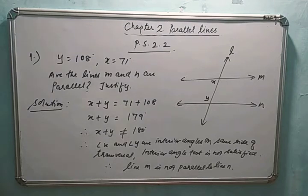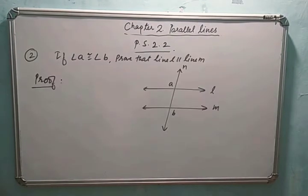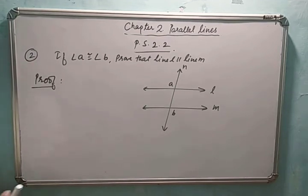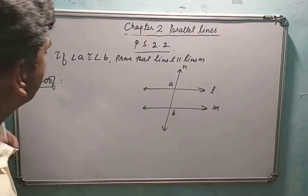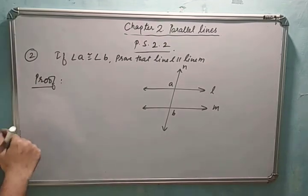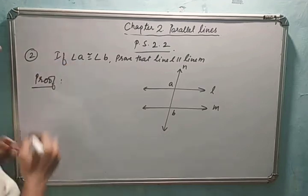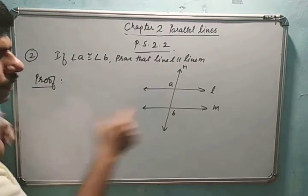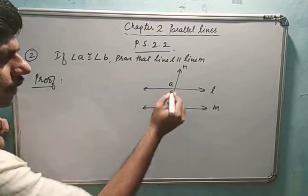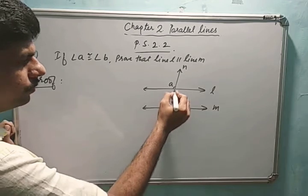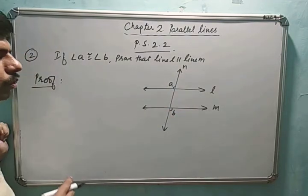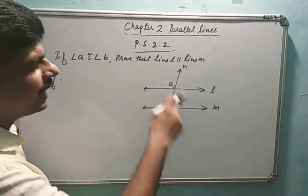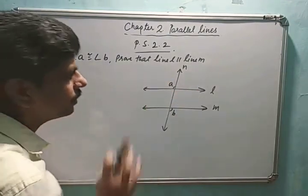Note down this sum. Now let's see the second problem: if angle a is congruent to angle b, as shown in the figure — these two angles are congruent — prove that line l is parallel to line m.